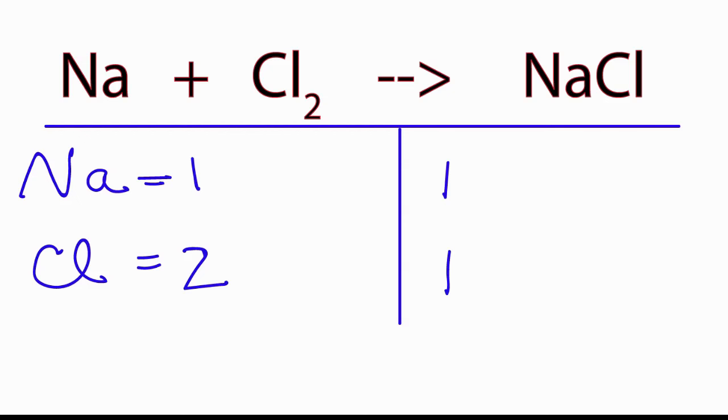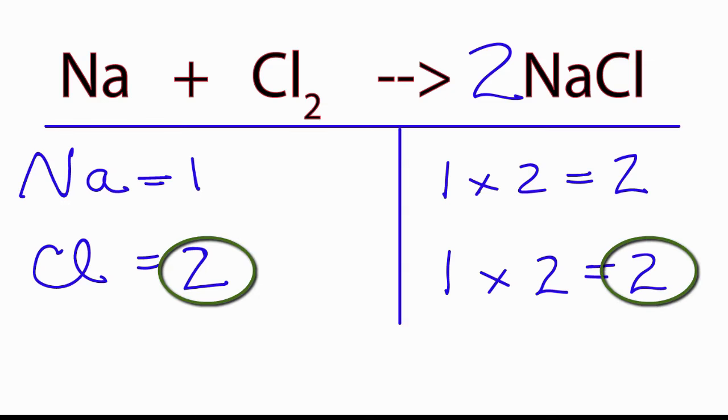The first thing I'll do is put a 2 in front of the NaCl, and that means I'll have 1 times 2, I'll have 2 Na's, and 1 times the 2 here, that means I'll have 2 Cls. So now I have 2 Cls on both sides of the equation.